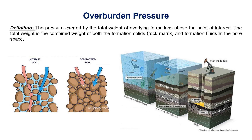Talking about the definition of overburden pressure, it can be defined as the pressure exerted by the total weight of overlying formations above the point of interest. The total weight is the combined weight of both the rock matrix and the formation fluids in the pore space.